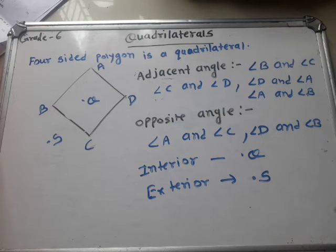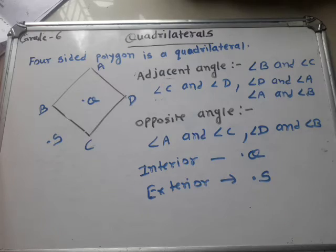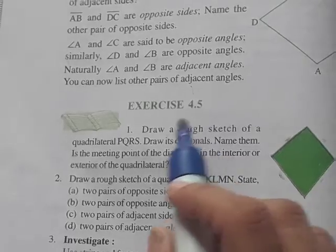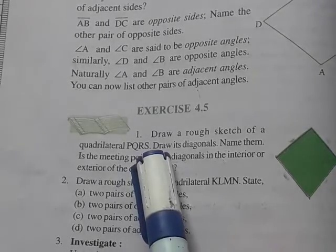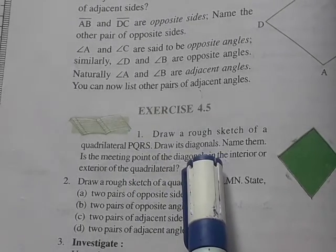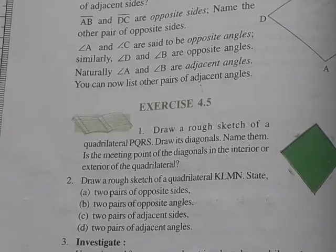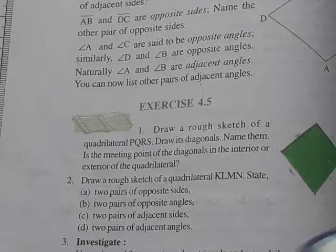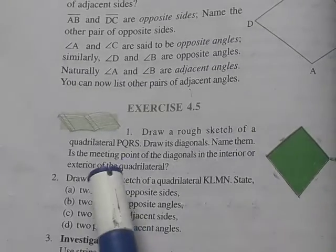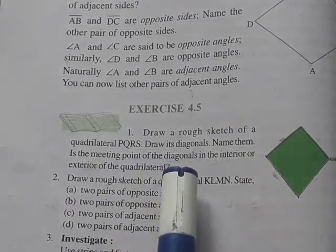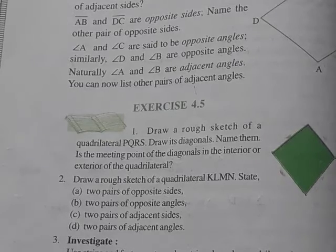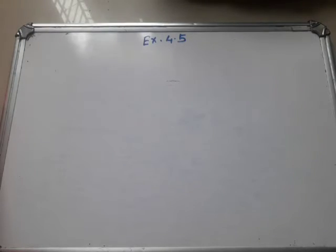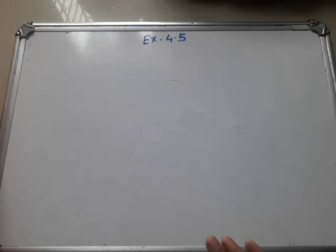These are all the information about quadrilaterals. Now you have to solve exercise 4.5. Question number 1 is: draw a rough sketch of quadrilateral PQRS and draw its diagonals. Diagonals means you have to join the opposite points — the opposite angles. You have to join them to make the diagonals.